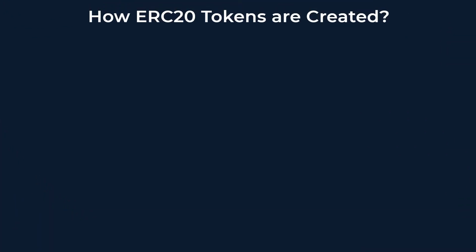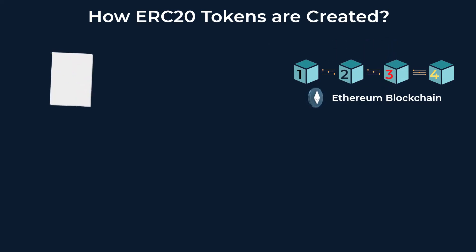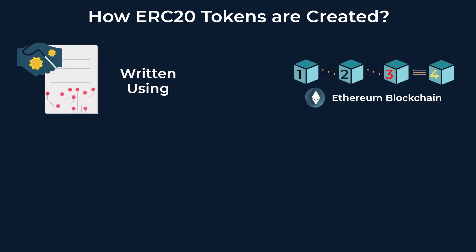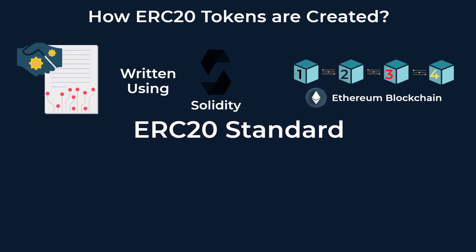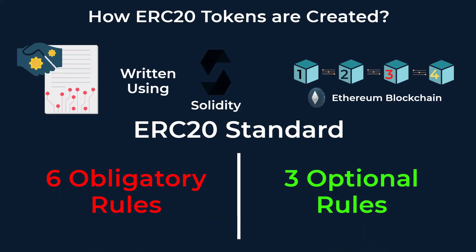How is an ERC-20 token created? Anyone can create one by writing a smart contract and running it on the Ethereum blockchain. This smart contract is written using the Solidity language most of the time, and if you have any experience with JavaScript, you can figure it out with no problems. To make your token compatible with most exchanges and wallets, you will need to follow six obligatory rules and three optional rules.